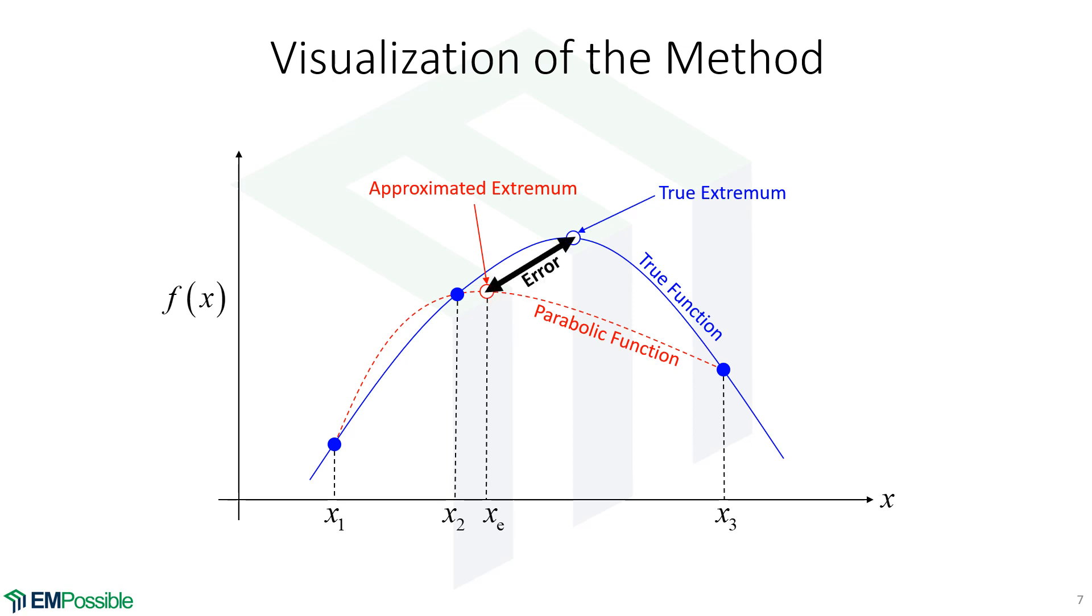So the difference between those two, really the span in x, is our error. So this is not exact. And the closer we can get those three points to the true extremum, the more accurate this will be. The more the true function looks like a second order polynomial, also the more accurate that will be.